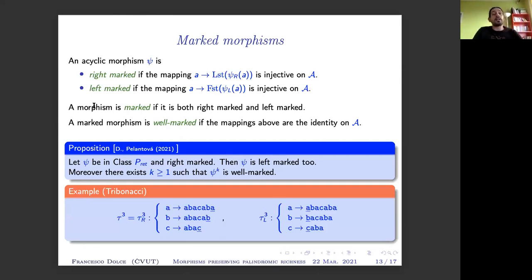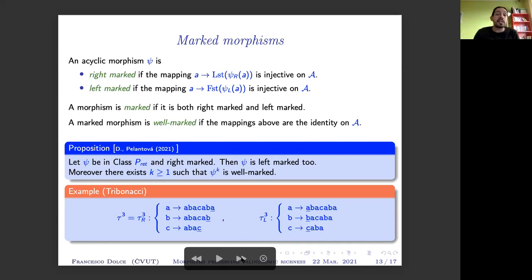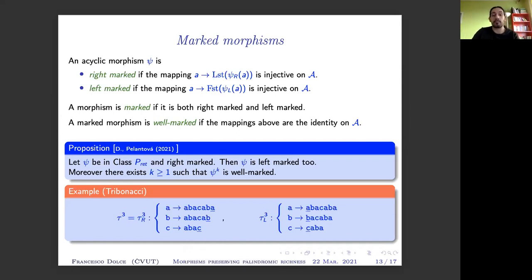If we start with a morphism in class P-rite that is right marked, then we get left marked for free — and hence marked for free. Moreover, if we consider a sufficiently large power of the morphism — which is fine since we focus on languages, which do not change under powers — then it is not only marked but also well marked. As an example: Tribonacci is marked but not well marked, but when we consider the cube of Tribonacci, the last letter of the rightmost conjugate of each letter coincides with that letter: A to A, B to B, C to C. The same holds for the first letter of the leftmost conjugate.